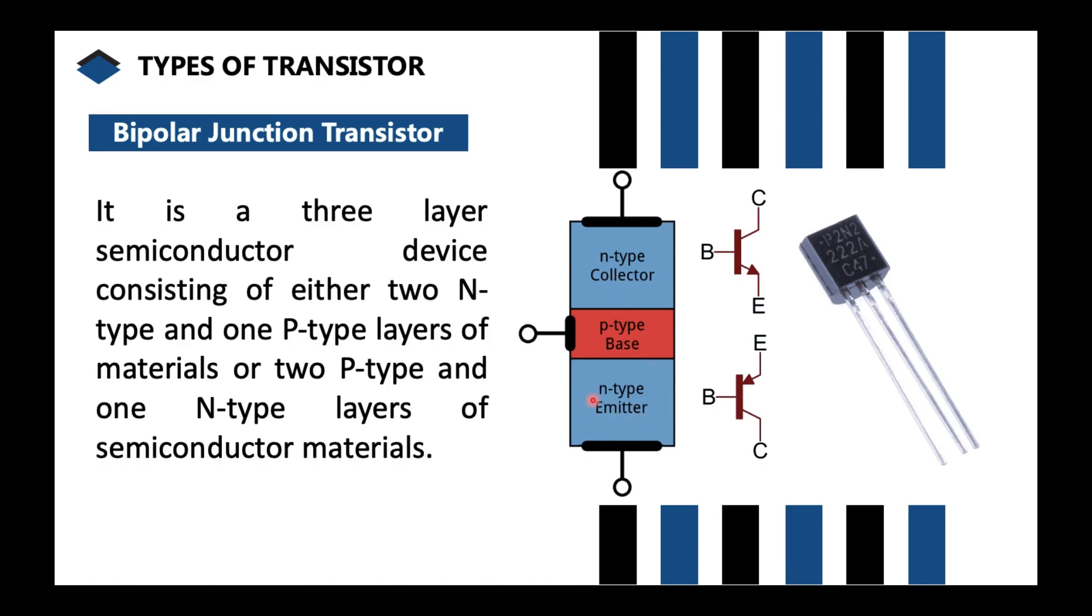A bipolar junction transistor is composed of three layers as depicted in this picture: layer one, layer two, and layer three. Those three layers could be made up of two N-type materials and one P-type, or two P-type and one N-type sandwiched in the middle. These two are the schematic symbols for transistor, which we'll discuss later on.